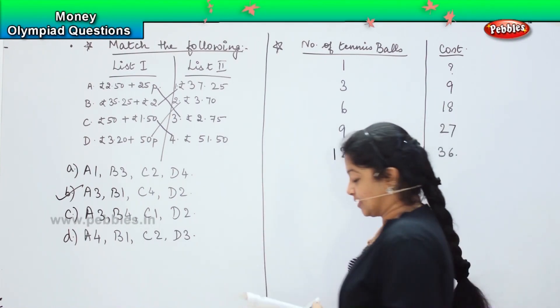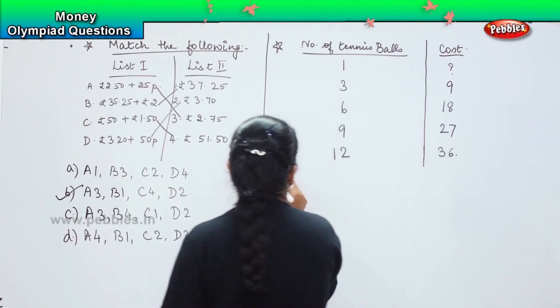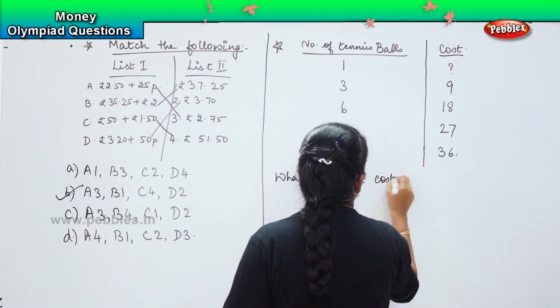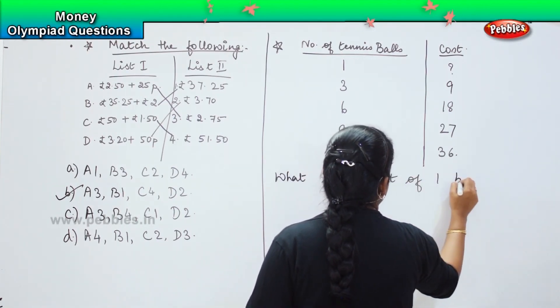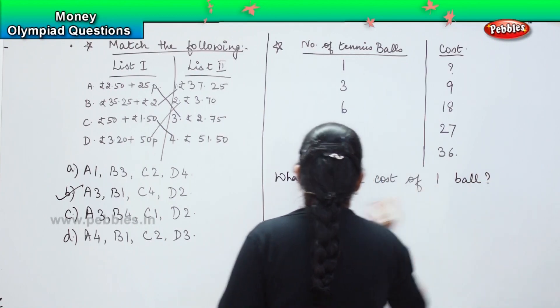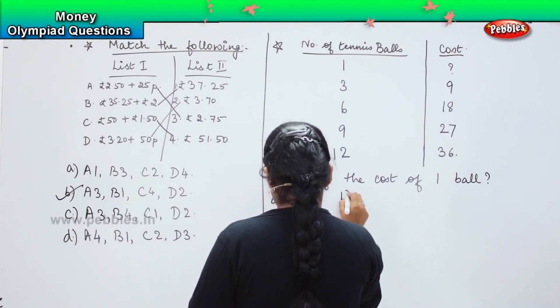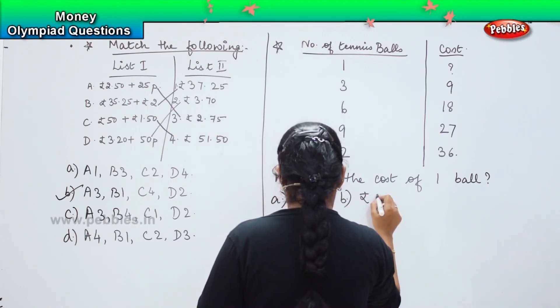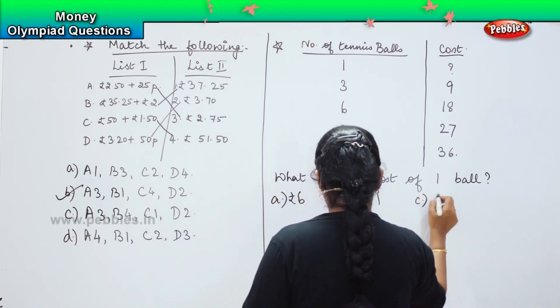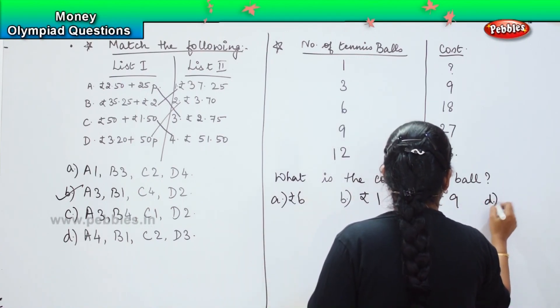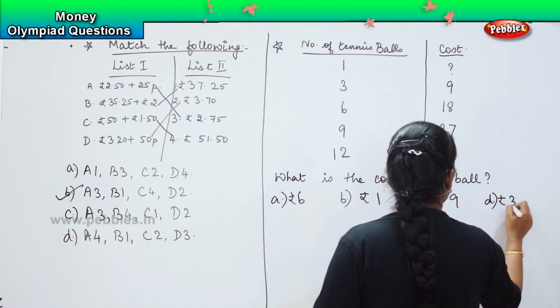So, your options are: A6, option B is 1, option C is 9, and option D is 3.